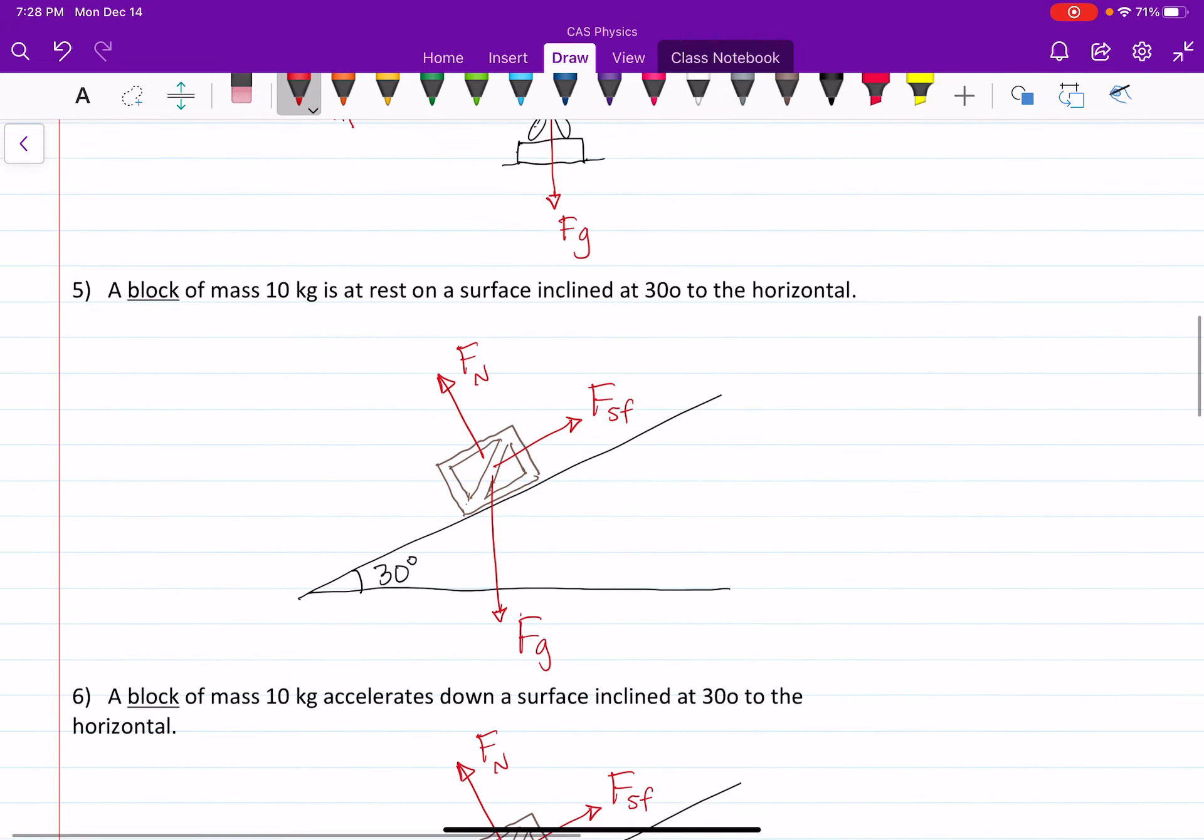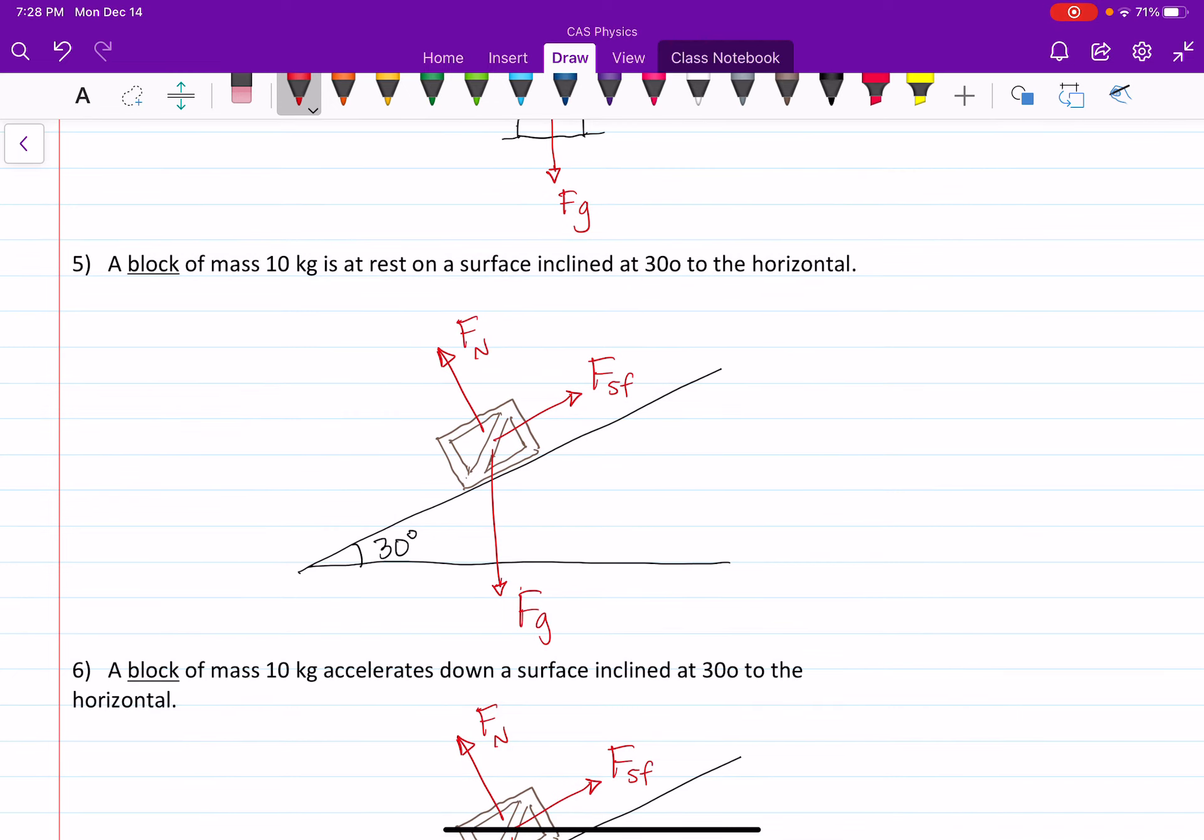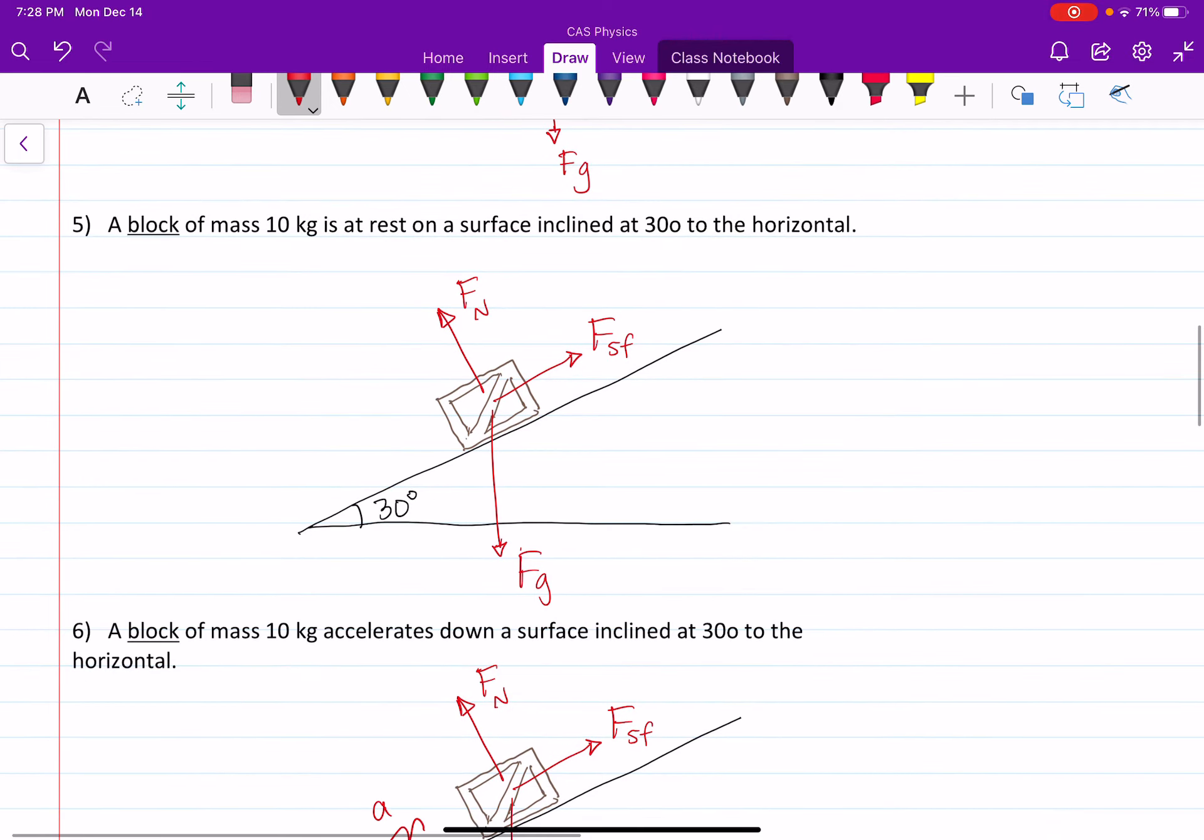All right, the next one, a block of mass 10 kilograms is at rest on a surface inclined at an angle of 30 degrees above the horizontal. So let's say you've got this surface, and there's your angle, it's 30 degrees. The force of gravity always acts straight down. You could give more information here. You could say this is equal to mg, which is equal to 10 times 9.8. So 98 newtons, but we're not going to go into that much detail for now. You've also got the normal force, and the normal force, like we talked about in class, is always perpendicular to the surface. So it is going to be perpendicular to that 30 degree angle.